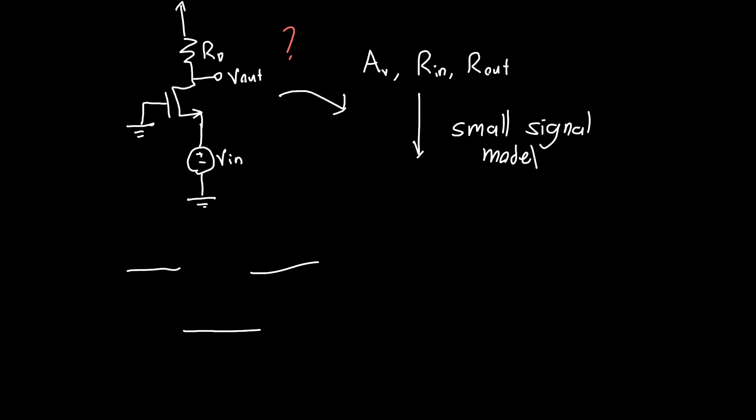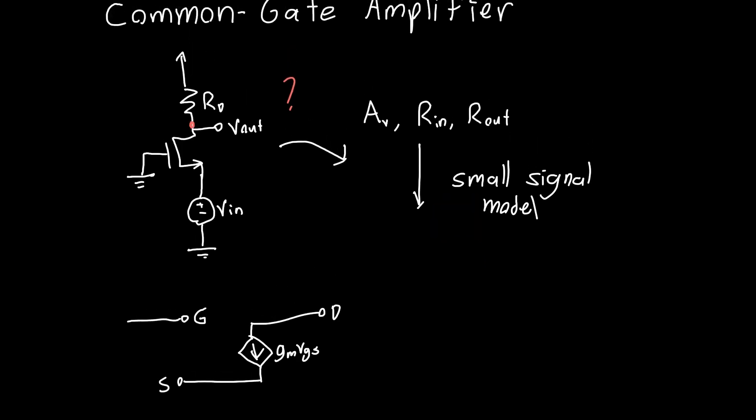First we can draw the small signal model, the hybrid pi model of the transistor itself. This is the gate, this is the source, and this is the drain. We see that the drain of the MOSFET is connected to a resistor RD. That resistor is connected to VDD, which instead gets connected to ground because VDD doesn't change in small signal. That's our drain voltage and this is also Vout.